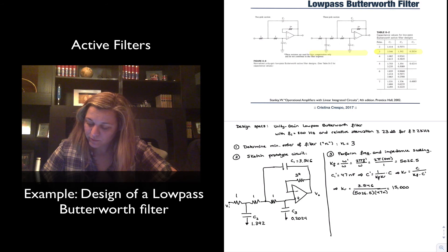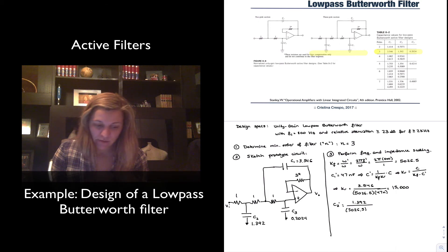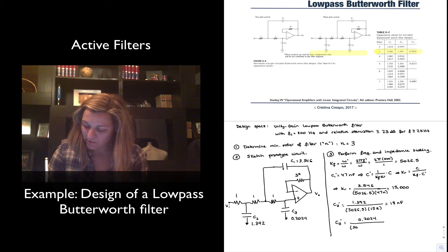And from that I can calculate my C2 prime, which is going to be basically equal to C divided by Kf times Kr. And C2 is 1.392 divided by 5026.5 times 15K, which comes out to be 18 nF. And my C3 prime is equal to 0.2024 divided by 5026.5 times 15K, or 2.7 nF.